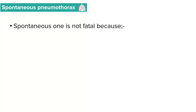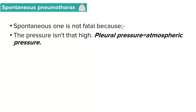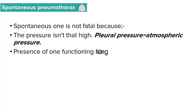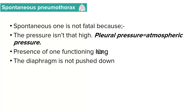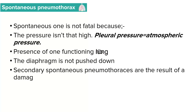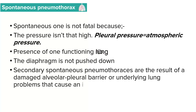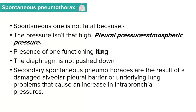In most cases, spontaneous pneumothorax is not a fatal illness because the pressure inside the pleural cavity is almost equal to atmospheric pressure. Normally, the pleural cavity has a negative pressure. The presence of one functioning lung makes this condition unlikely to worsen further. The diaphragm is not pushed down in these patients, and secondary spontaneous pneumothorax occurs as a result of a damaged alveolar pleural barrier or an underlying lung problem that can cause an increase in intrabronchial pressures. Primary spontaneous pneumothorax occurs in patients without an underlying lung condition, compared to secondary spontaneous pneumothorax which occurs in patients who have underlying lung pathologies.